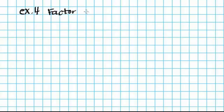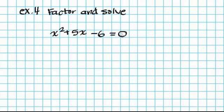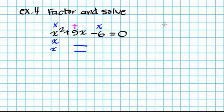Example number 4: we're going to factor and solve the trinomial x squared plus 5x minus 6 equal to 0. The factors of x squared have to multiply up to x squared, the factors of negative 6 have to multiply up to negative 6, and the center terms have to add up to 5x. Factors of x squared are x and x, and factors of 6 are 1 and 6, and 2 and 3.